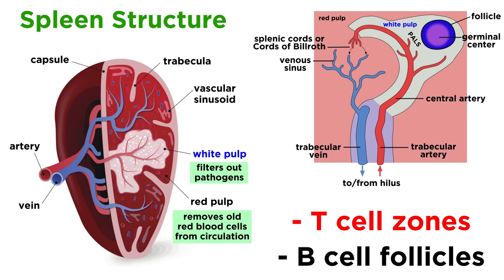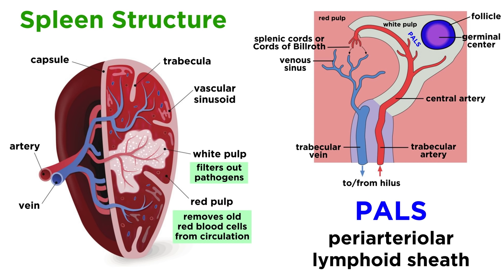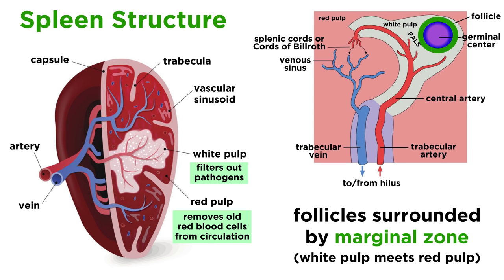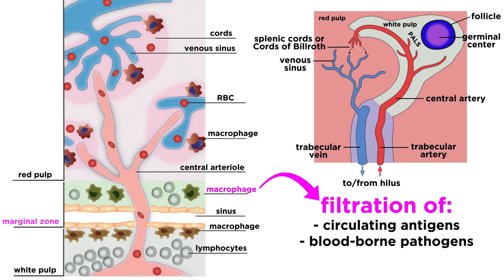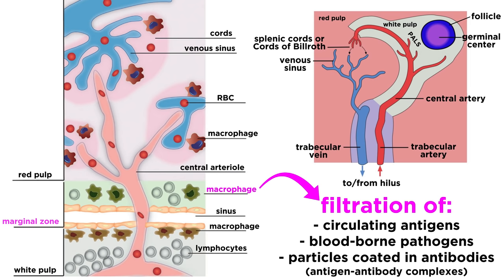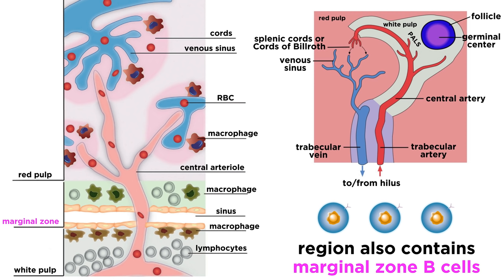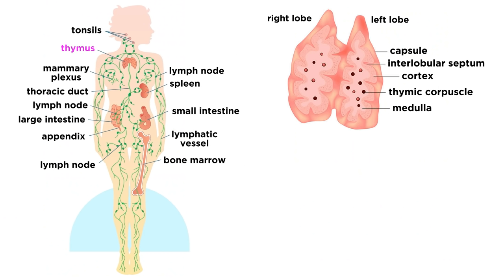Interspersed within the red pulp are pockets of white pulp, which have a similar structure to the lymph nodes, with T-cell zones and B-cell follicles. In the spleen, the T-cell zone surrounds the arterioles, and is located in the peri-arteriolar lymphoid sheath, or PALS. Outside the sheath are the B-cell follicles, which are surrounded by the marginal zone, which is where the white pulp meets the red pulp. Macrophages and dendritic cells in the marginal zone can help filter circulating antigens, bloodborne pathogens, and cells or particles coated in antibodies, called antigen-antibody complexes. The marginal zone also contains special non-circulating B-cells called marginal zone B-cells, which do not require T-cell help for activation, and seem to be effective first responders at sensing and neutralizing bloodborne threats.